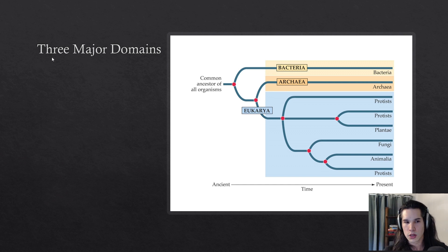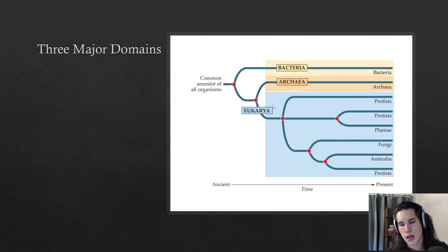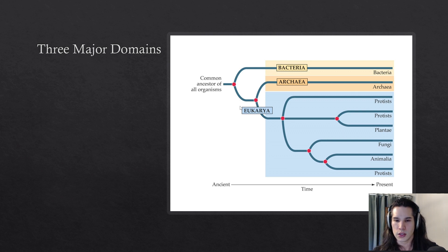There are three domains of life: bacteria, archaea, and eukarya. To break down the term 'eukarya' — 'eu' means true and 'karya' means seeded, so 'true seeded' is the breakdown of eukarya. All organisms in the domain eukarya are composed of cells that have nuclei — the nucleus is that true seed.